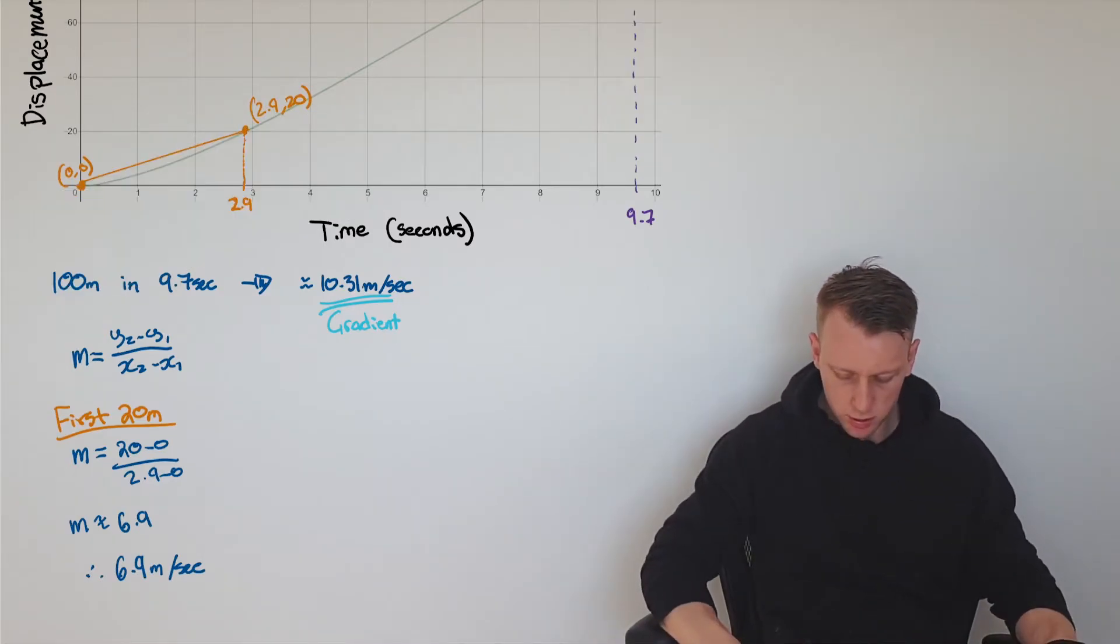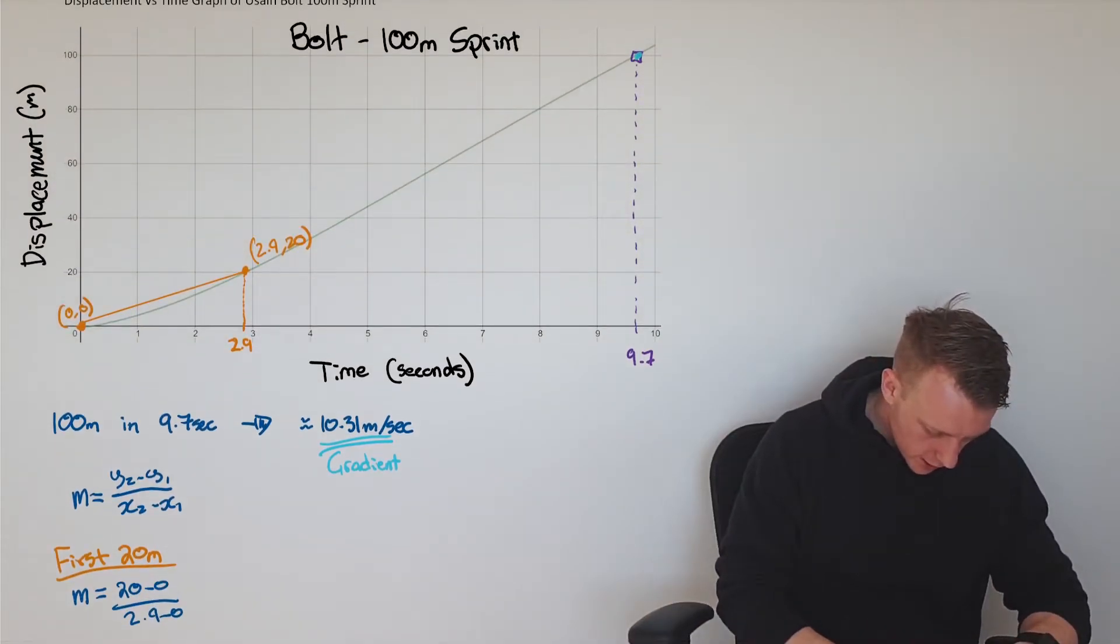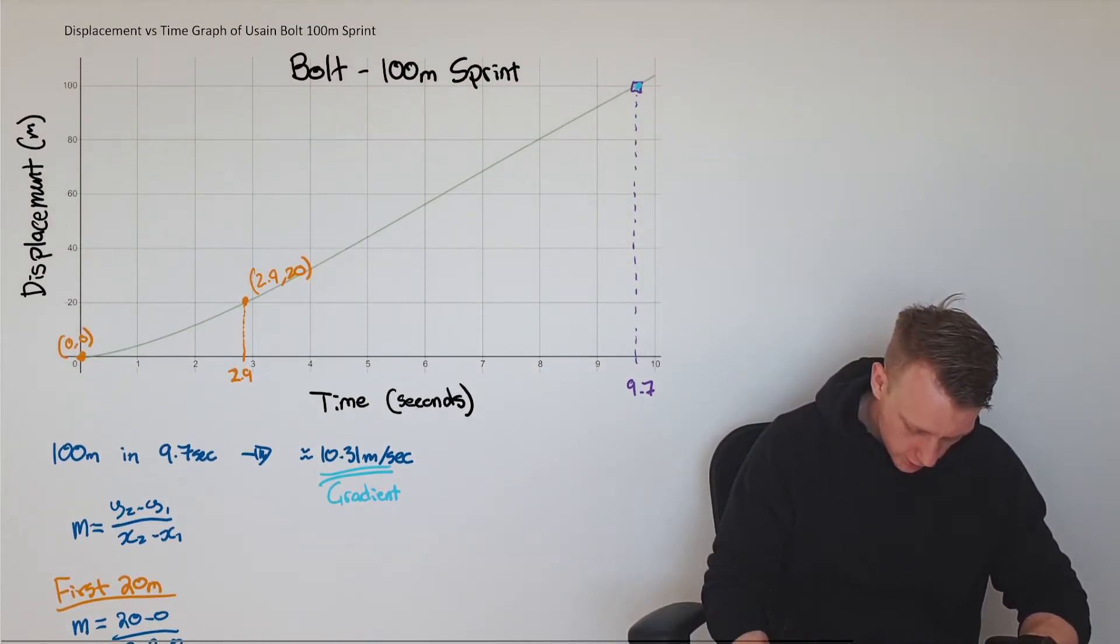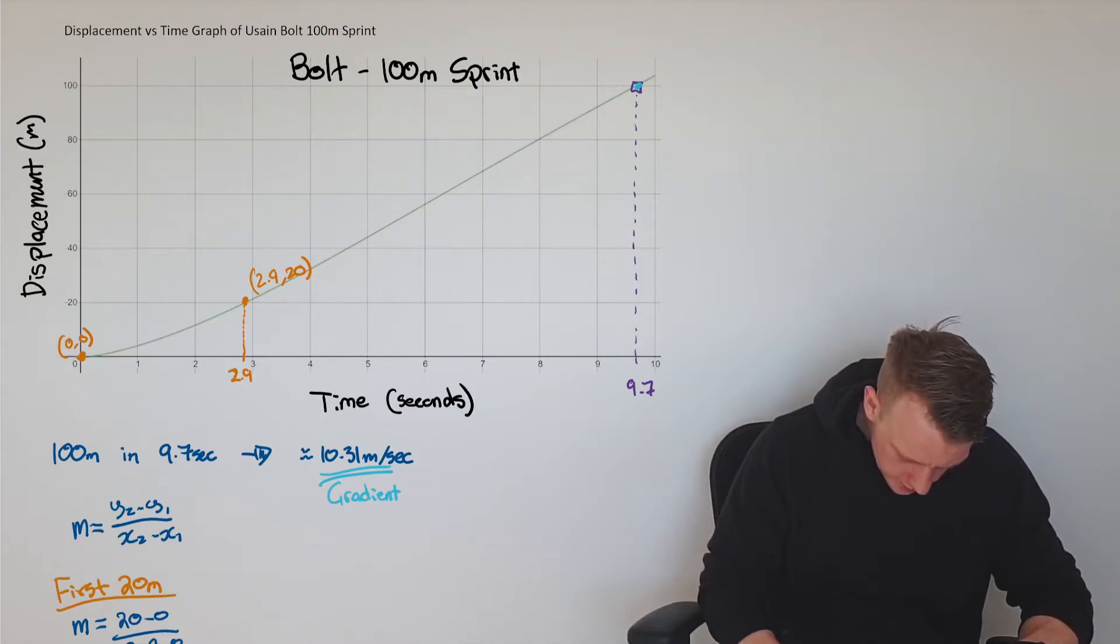Let's consider the last 20 meters of this race. The last 20 meters, let's say it goes from 80 meters to 100 meters. This point here would be (9.7, 100) and this point here would be (8, 80).